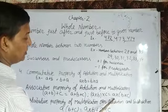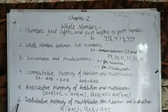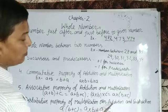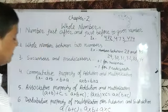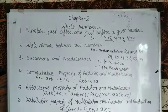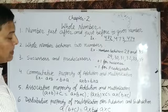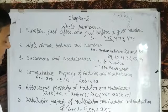Now sixth property is distributive property of multiplication over addition and subtraction. In this, a bracket b plus c equals a multiply by b plus a multiply by c. Here a is distributed to both numbers.